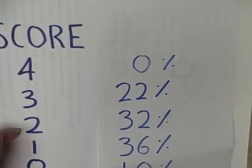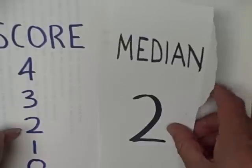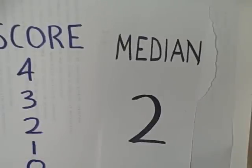Once again, the median for these data happens to be 2. Notice that all of our measures of central tendency, the mean, the median, and the mode, were within our range of 0 to 3.